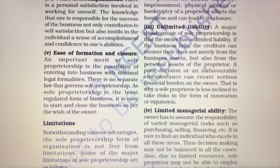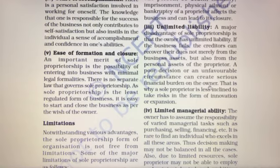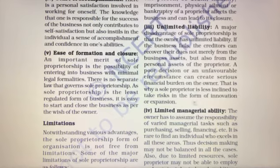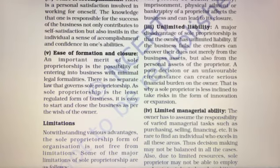A poor decision or an unfavorable circumstance can create a serious financial burden on the owner. That is why a sole proprietor is less inclined to take risks in the form of innovation or expansion — क्योंकि unlimited liability की वजह से वो risk लेने के लिए बहुत कम तैयार होता है।